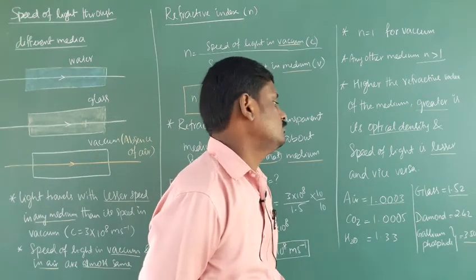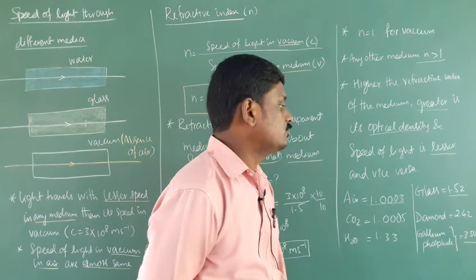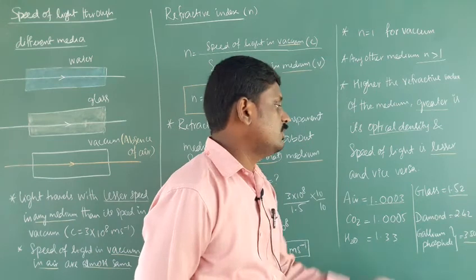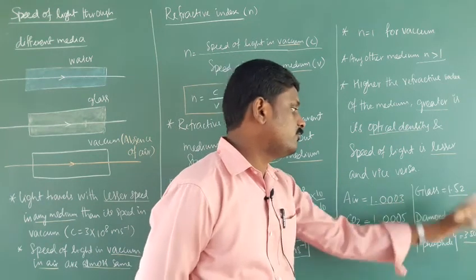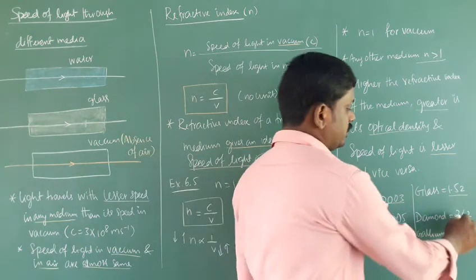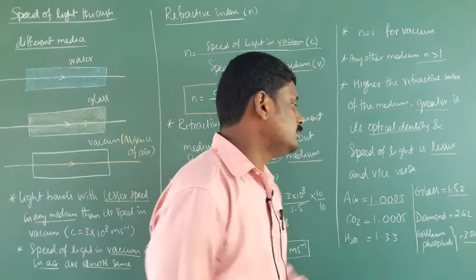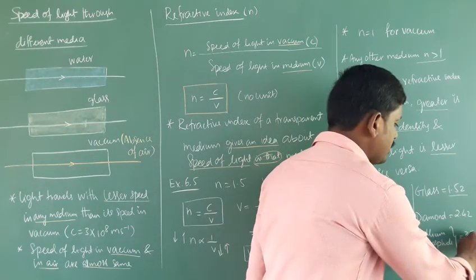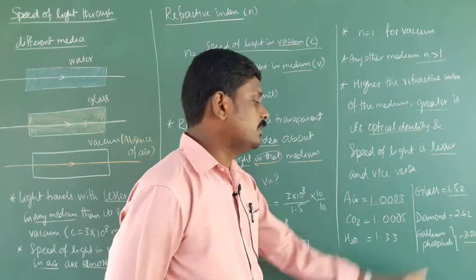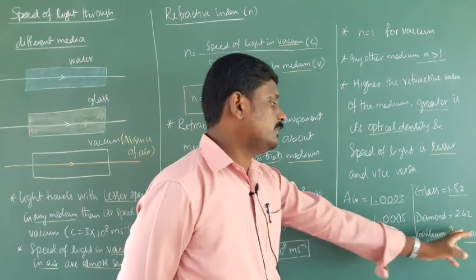Some important values to remember: glass is 1.52 — we will verify this experimentally using a spectrometer and prism where the value comes out around 1.5. Diamond is 2.42. The maximum refractive index value belongs to gallium phosphate at 3.50. These values — diamond 2.42 and gallium phosphate 3.50 — may be asked in one-mark questions.